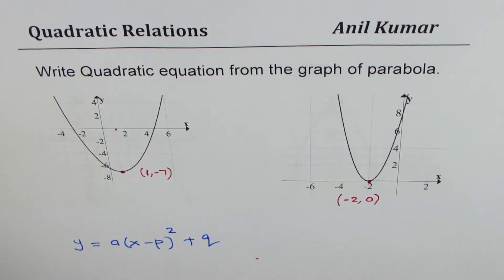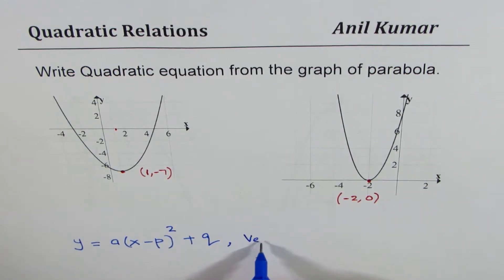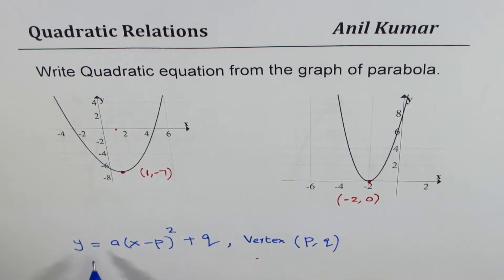In some books you'll find p and q written as c, d or a, b, different words, but it really means that in this form the vertex is at p, q. That is called the vertex form of our quadratic equation. We are going to use this equation to write the relation which represents the graph.